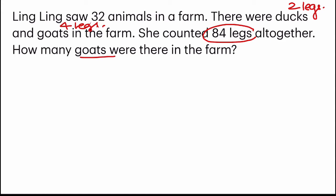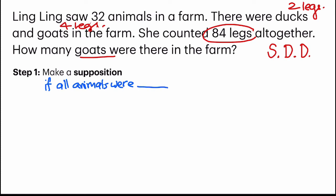We're going to use supposition to solve this question, and I came up with a short form to help you remember the steps. It's called SDD. Step number one is to make a supposition. It's something like an if statement. If all animals were something. So in this case, should we make the supposition for all to be goats?